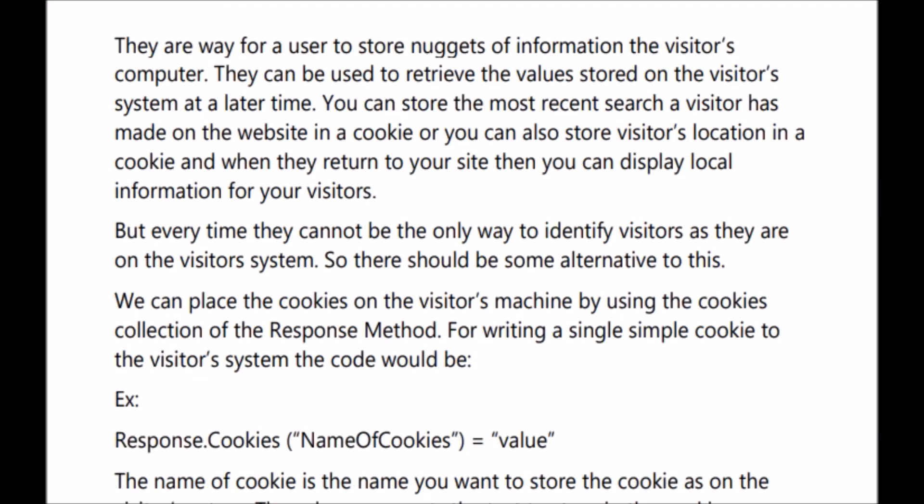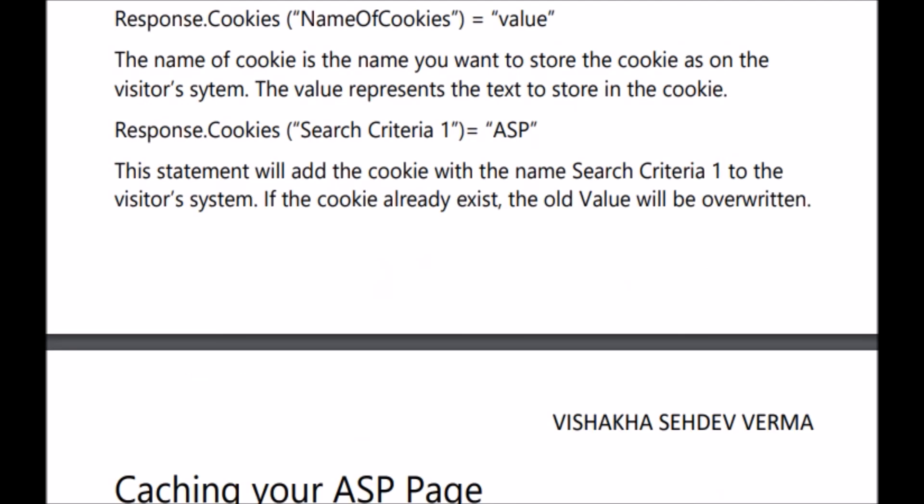The name of the cookie is basically the name you want to store the cookie as on the visitor's system, and the value represents the text to be stored in the cookie. For example: response.cookies("SearchCriteria1") = "ASP" — this statement will add a cookie with the name 'SearchCriteria1' and the value 'ASP'. If there is any cookie that already exists, the old value will be overwritten. That's all for the day, thank you.